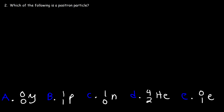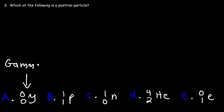Number two: which of the following is a positron particle? Let's go through each one. Answer choice A has a mass of zero and a charge of zero — this particle is known as the gamma particle. It's basically a high energy photon.